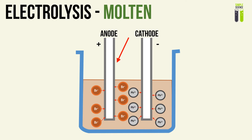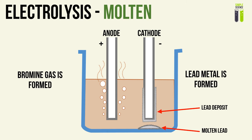We have the positive ion, which is the metal ion, and the negative one, which is the non-metal ion. In this case, the positive metal ion is the lead 2+ ion, or the cation, and attracted to the anode is the negative bromide ion. We looked at the half equations involved and the physical changes that happened throughout the process of electrolysis.